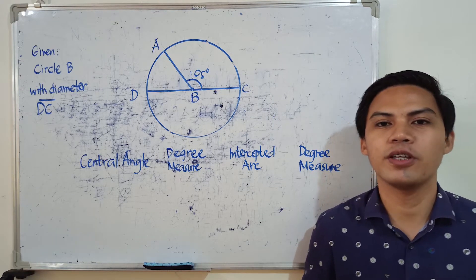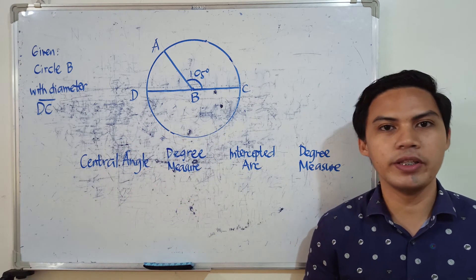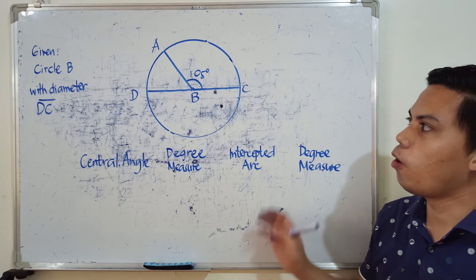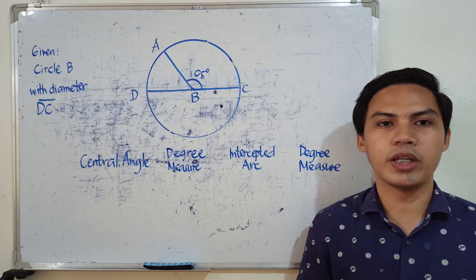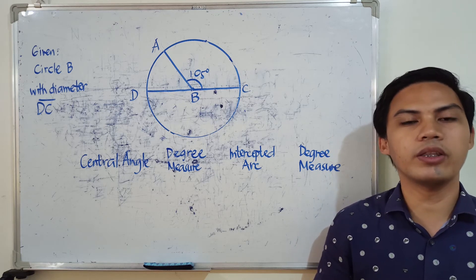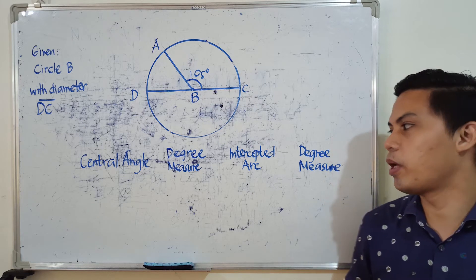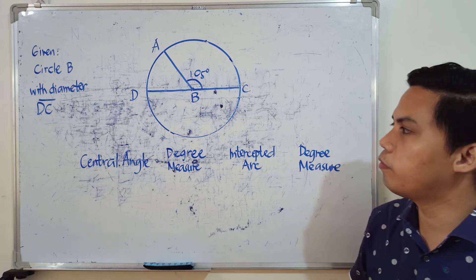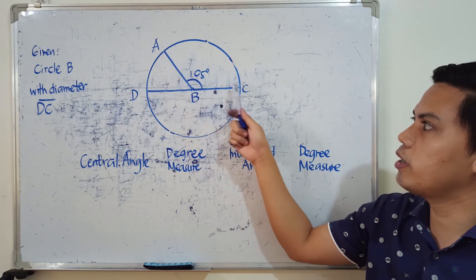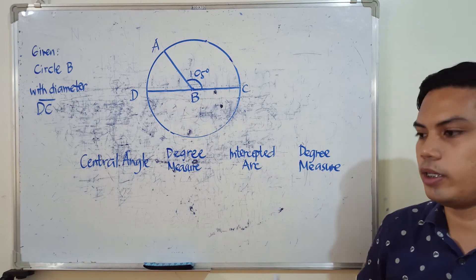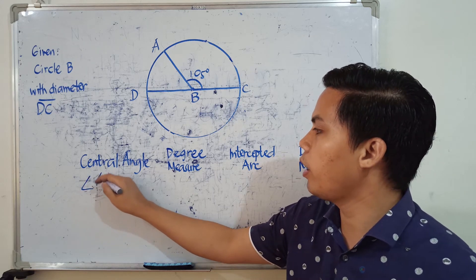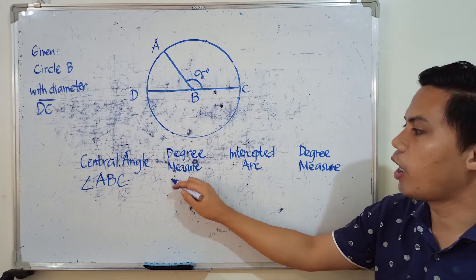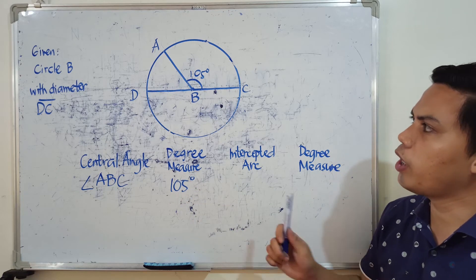Let's have more examples. Suppose we have circle B and its diameter is already given — the diameter is line segment DC. We're going to find all the central angles, their degree measures, and their respective intercepted arcs. Let's start with central angle ABC. Based on our illustration, angle ABC is 105 degrees.